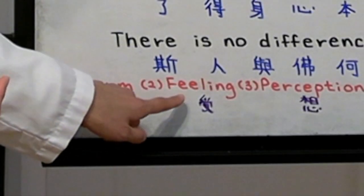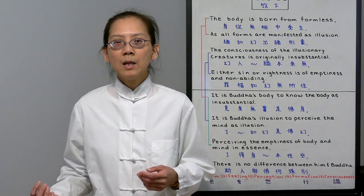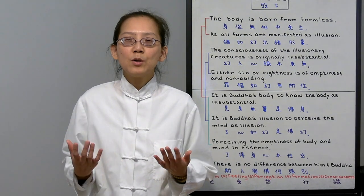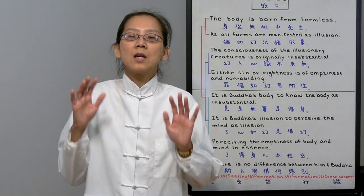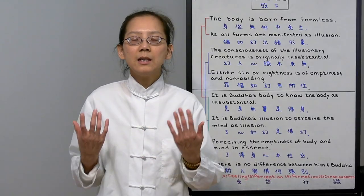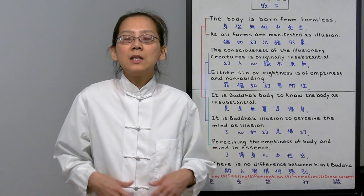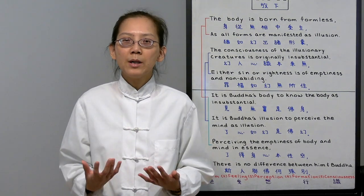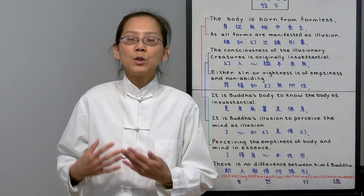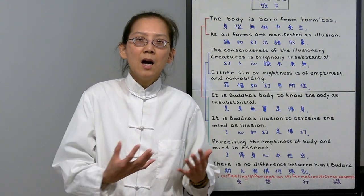We are attached to our feelings. We can have the feeling of pleasure, displeasure, or neutral. But our feeling is a reaction to the external world. So our feeling, our emotion, is very unstable because it's controlled by the external environment. Then it's our perception. This is our thinking. Our thinking follows our feelings. If we like something is pleasurable, we develop greed and we want more. If it's displeasure, we develop hatred or anger and we try to get rid of it. So our thinking can be very polluted if it's based on our feelings.